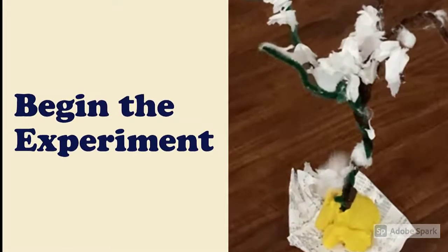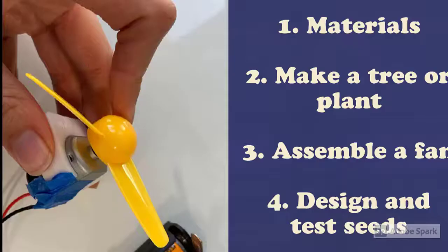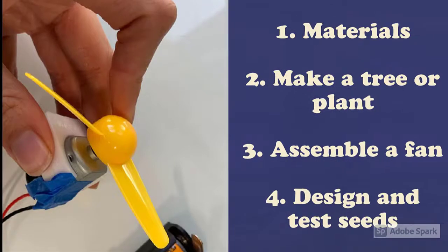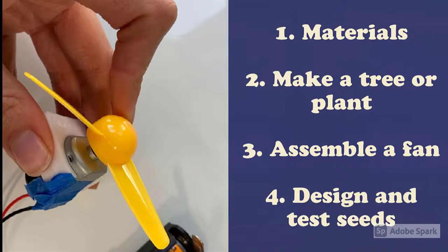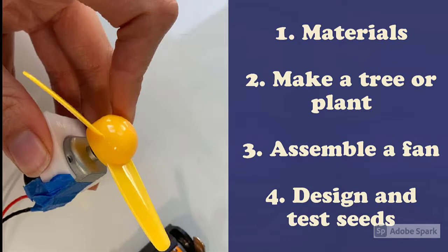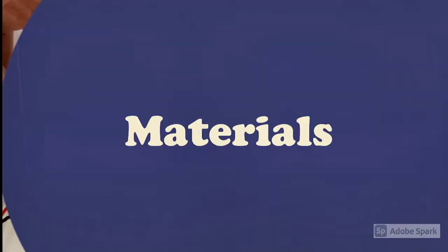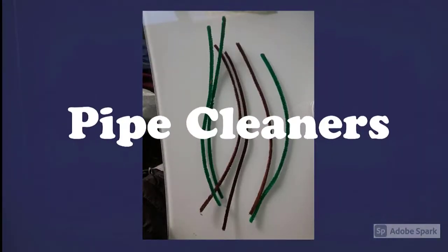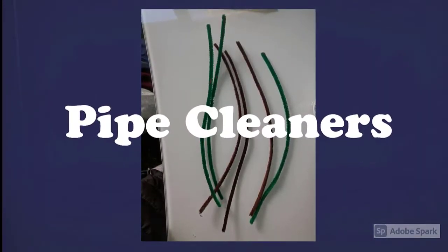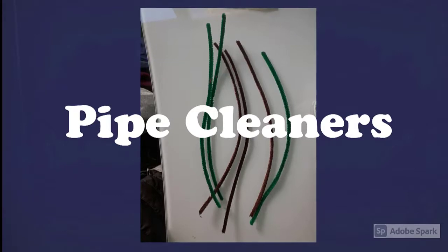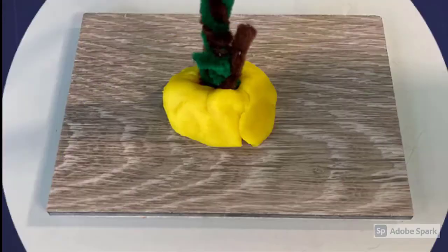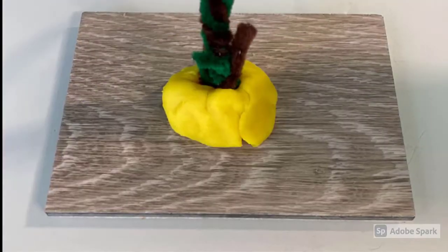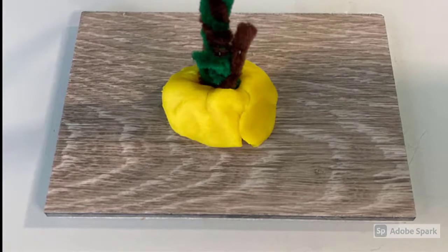Okay, now it's time to begin the experiment. We will go over materials, how to make a tree or plant, how to assemble a fan, and how to design and test your seeds. First, you will gather your materials. We'll be using pipe cleaners to make little trees for our seeds. We are also going to be using play-doh, which we will stick our pipe cleaner tree in so that it doesn't fall over.